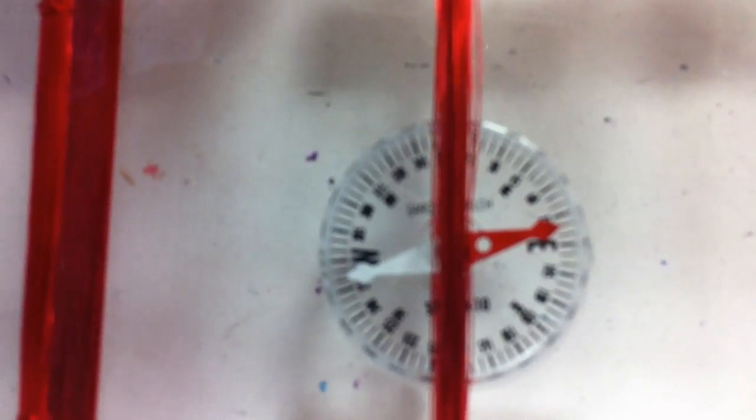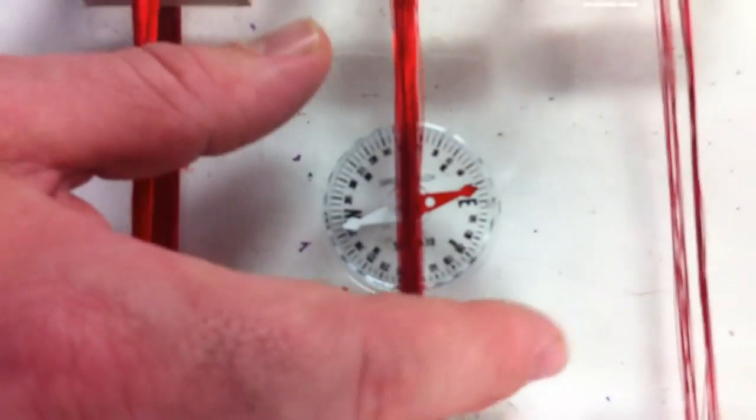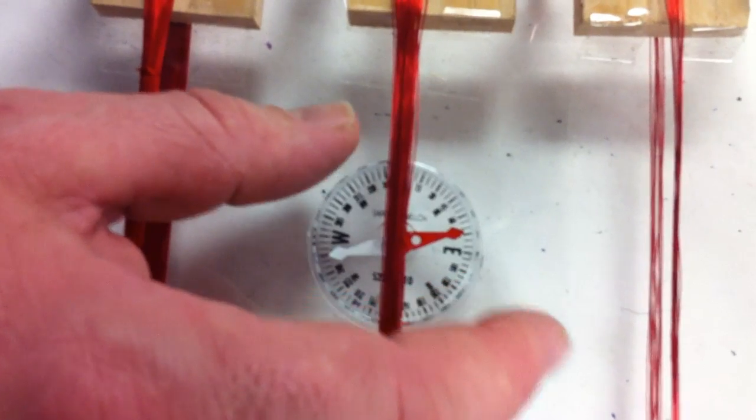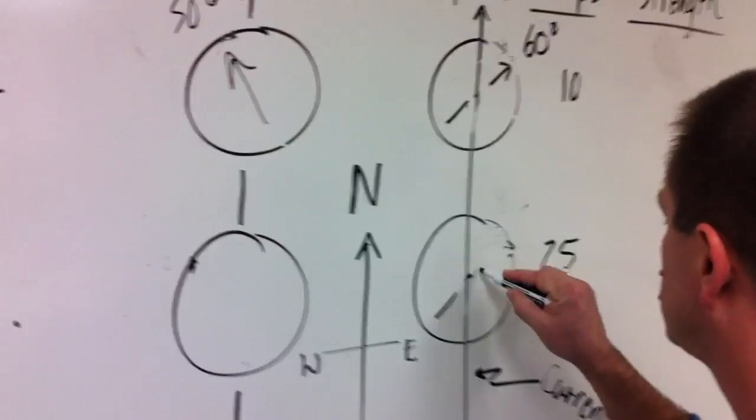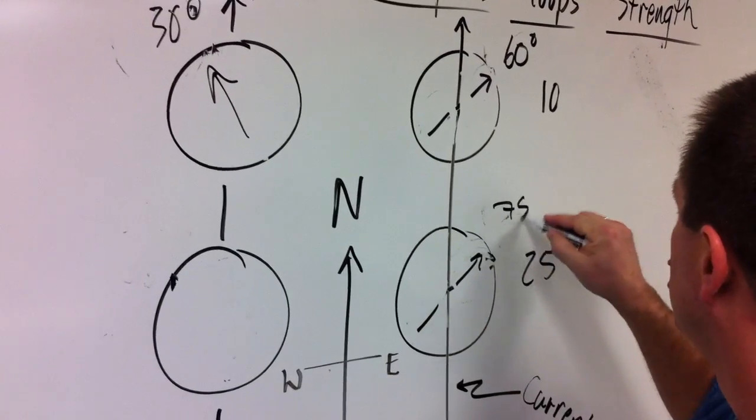And that goes to about, let me get it rotated just a little bit more here. Looks like it's about 75 degrees. And so you notice that when you have more turns of wire, the field is stronger when it's inside the loop.